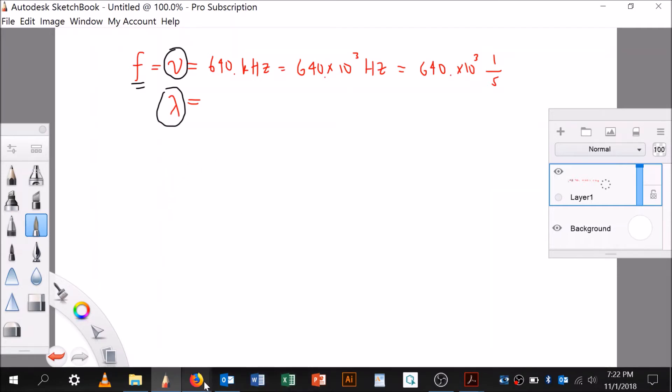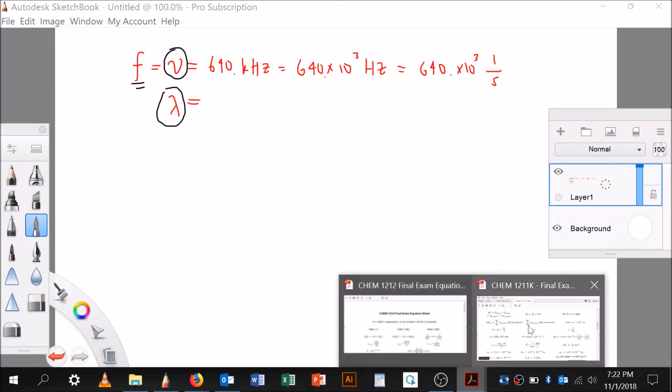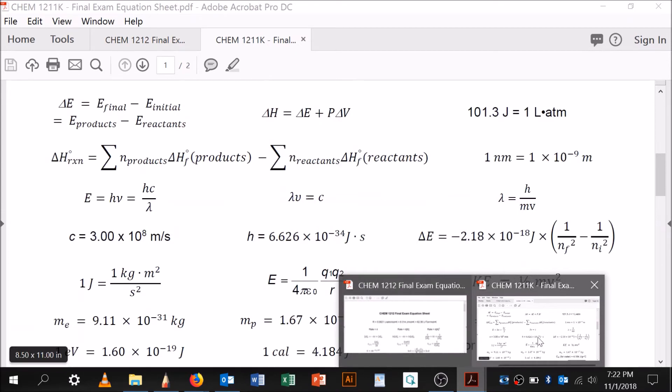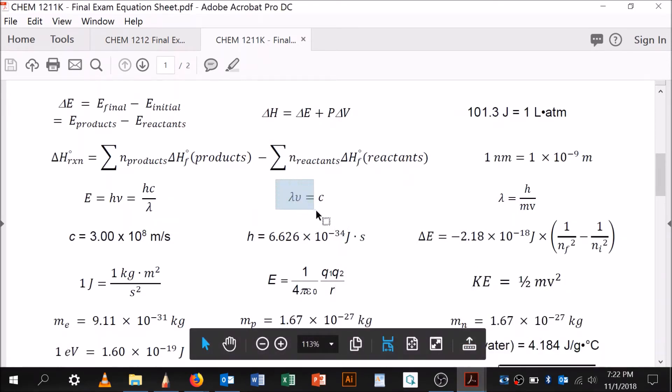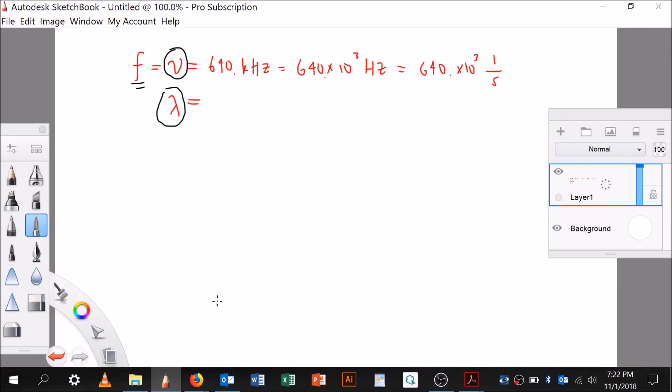So what I'm going to do is I'm going to go over to my formula sheet, which I pulled up already, and I'm going to look at it. This is the one for 1212. Here's the one for 1211. And I see right here in the middle of my screen is lambda nu is equal to C. Lambda nu is equal to C. Let me go back over here now. So I know then if lambda nu is equal to C, or as Alex might put it, lambda F is equal to C, right? Because we're using these two the same.